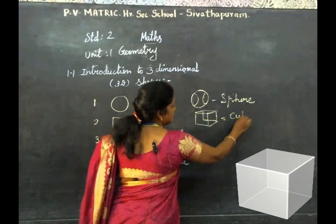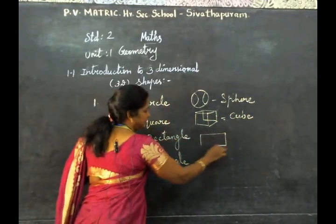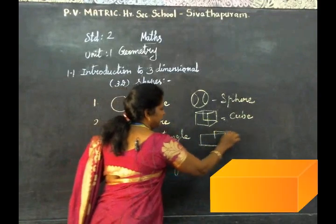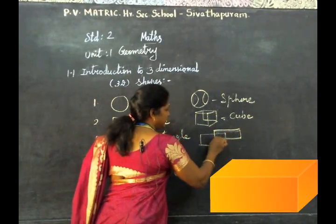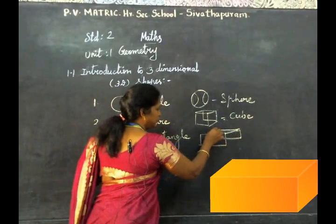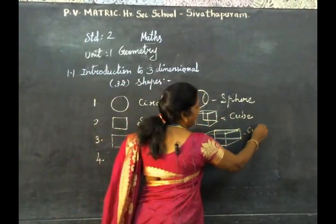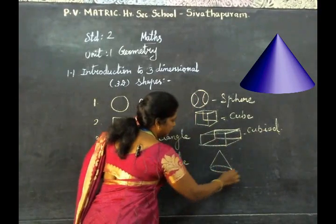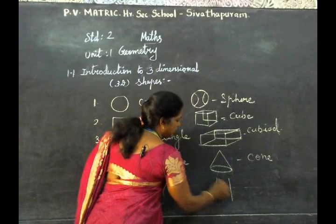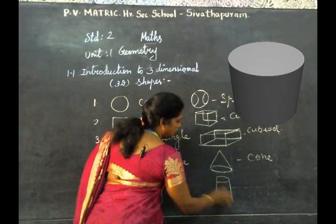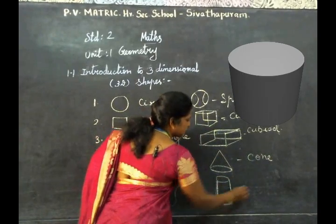Cube — this is cube. Cone — this is cone. This is cylinder.